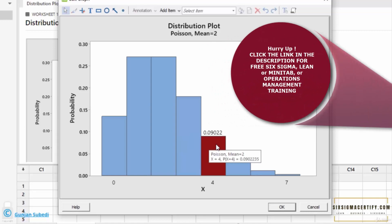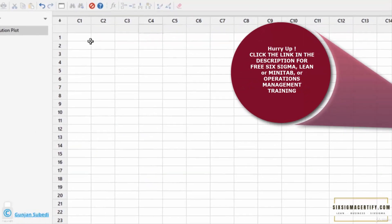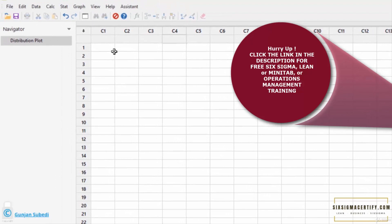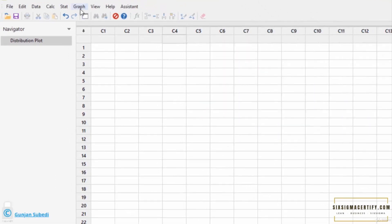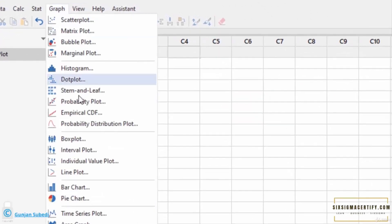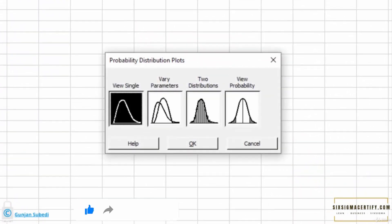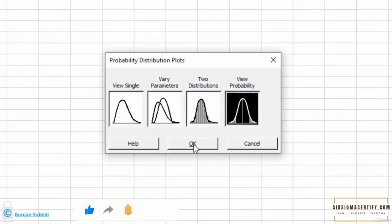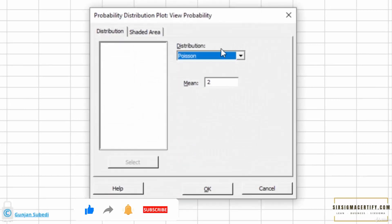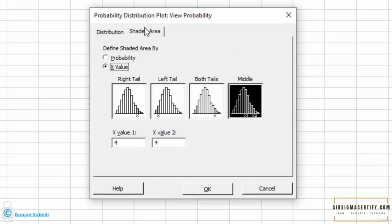Now let us look at the second scenario. We have to find the maximum number of air crashes with 90% probability in any given year. For that, we go to Graph, then Probability Distribution. Click View Probability and then click OK. This is Poisson distribution, and the mean is 2. We go to the shaded region.